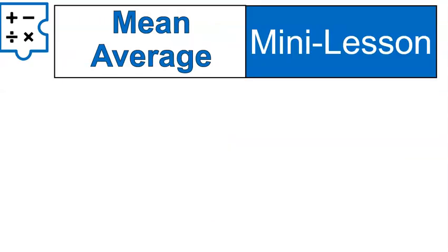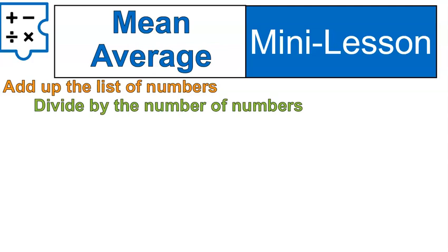Mean is the average, the actual mathematical average of a list of numbers. The way we calculate that average is that you add up the list of numbers and divide by the number of numbers. That's it. Those are the steps. This can sometimes take a little bit of time. I'll show you.